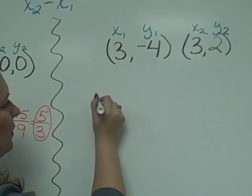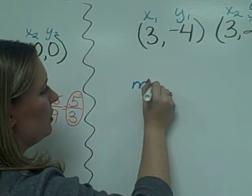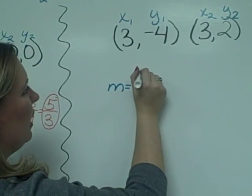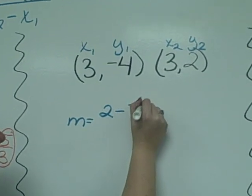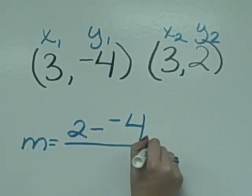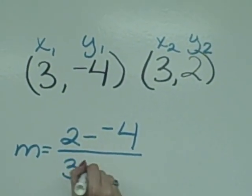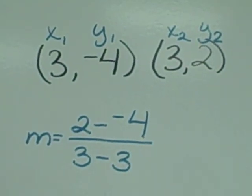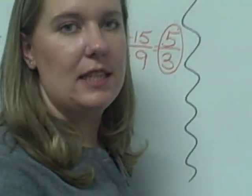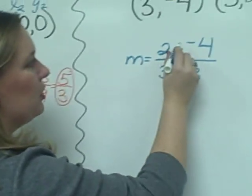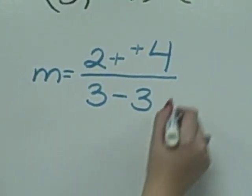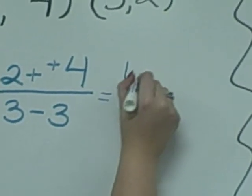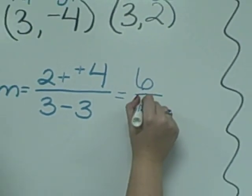Remember, y's go on top when solving for slope. So we would do y2 minus y1. So 2 minus negative 4, and 3 minus 3 for our x2 minus x1. 2 minus negative 4 again turns to plus positive, and that gives us 6. And 3 minus 3 is 0.